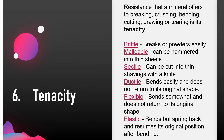The resistance that a mineral offers to breaking, crushing, bending, cutting, drawing or tearing is its tenacity. Tenacity can be described by the following terms: brittle — breaks or powders easily; malleable — can be hammered into thin sheets; sectile — can be cut into thin shavings with a knife; ductile — bends easily and does not return to its original shape, and can be drawn into wires; flexible — bends somewhat and does not return to its original shape; elastic — bends but springs back and resumes its original position after bending.